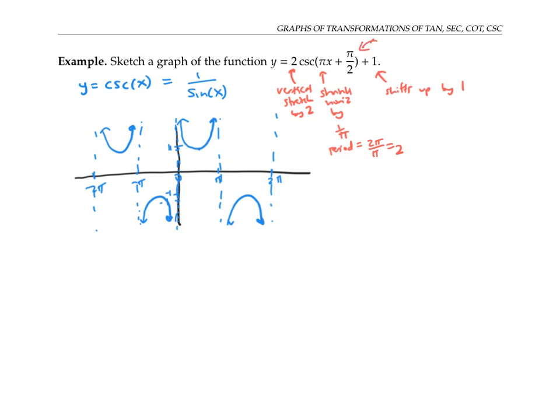Finally, this pi over two has to do with a horizontal shift. But in order to see by how much we horizontal shift, we need to factor out the pi first. So if I rewrite my function as two times cosecant pi times x plus a half, plus one, I can see that the horizontal shift is one half to the left.